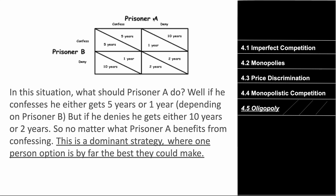If Prisoner A confesses, they get either five years or one year depending on Prisoner B. If Prisoner A denies, they get ten or two years. No matter what Prisoner B does, Prisoner A gets fewer years by confessing. So Prisoner A should always confess. Knowing this, Prisoner B also chooses to confess to get five years rather than ten. Both prisoners confessing is the outcome.